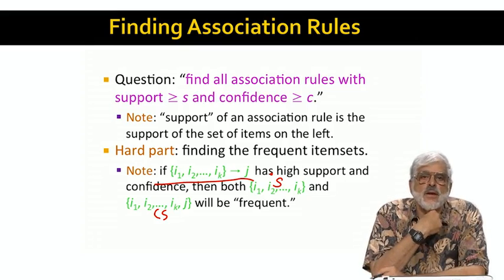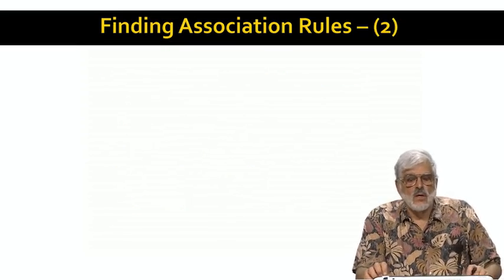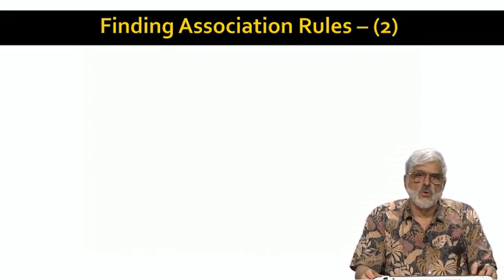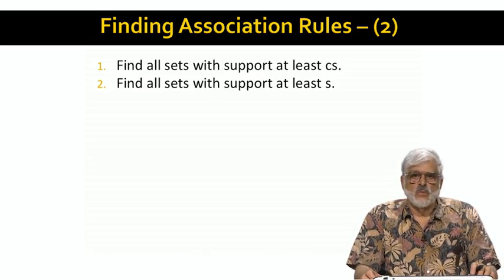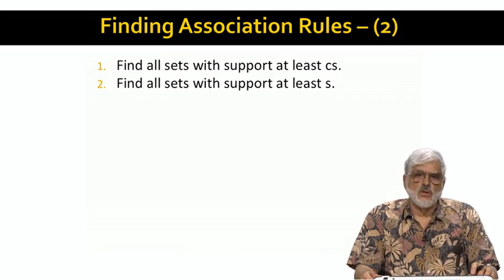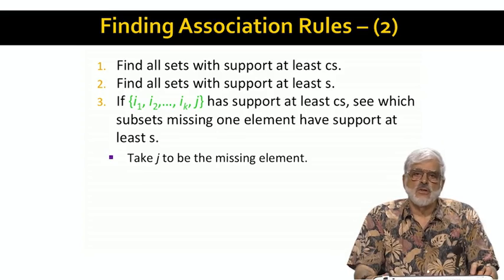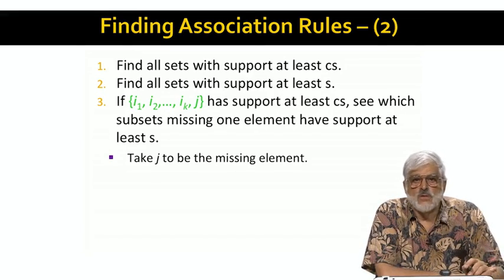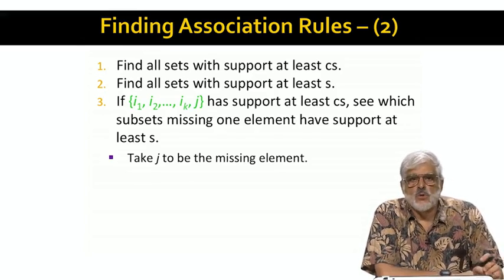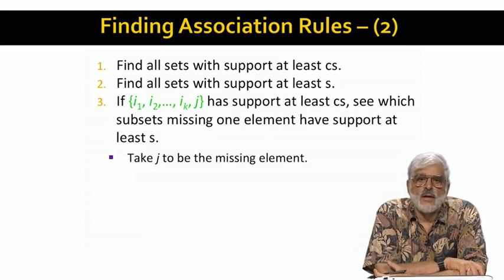Now, if C is large, then CS will be close to S, perhaps one half of S. Here's a recipe for finding all the association rules with support S and confidence C. Start by finding all the item sets with support at least CS. Also find the item sets with support at least S. That will be a subset of the first set of item sets. Let's focus on an item set in the first collection, that is one with support at least CS. Suppose it has K plus 1 items as members. There are K plus 1 subsets of size K, each formed by removing one of the items. I've abused the notation a bit by singling out one of them as J, the item to be removed leaving I1 through IK. But in fact, we have to do this K plus 1 times, one for each of the items.